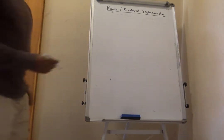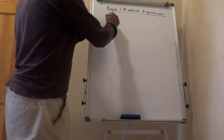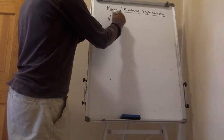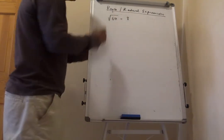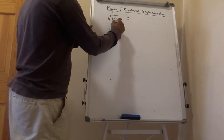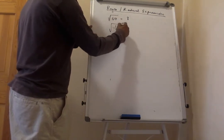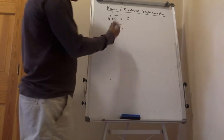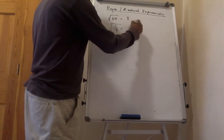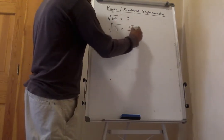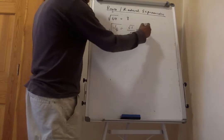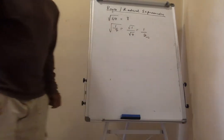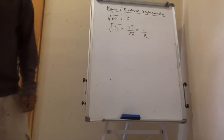Let's do some examples. The square root of 64 is 8. If I do the square root of 1 over 4, this equals the square root of 1 over the square root of 4. The square root of 1 is 1 and the square root of 4 is 2, which gives 1 over 2.